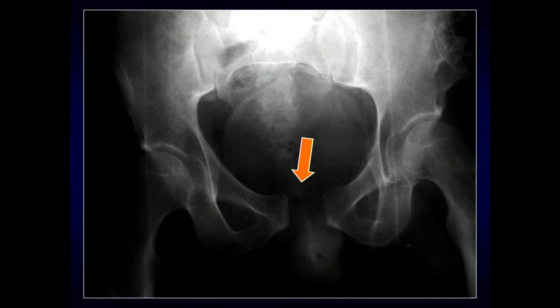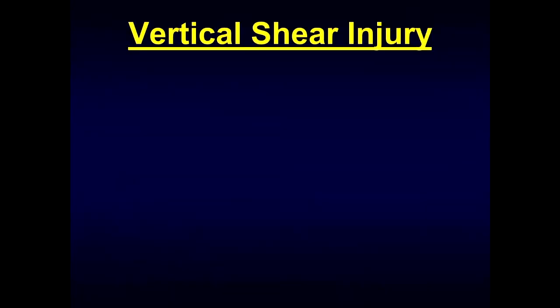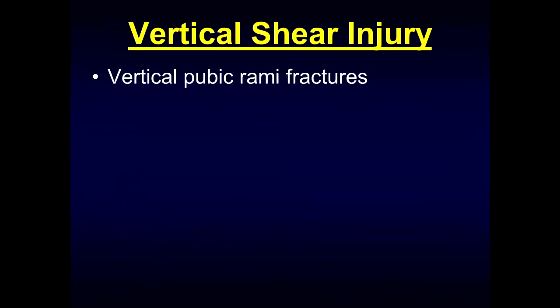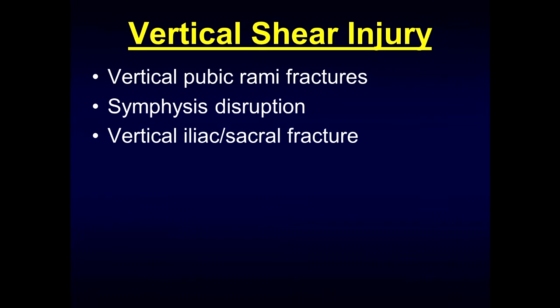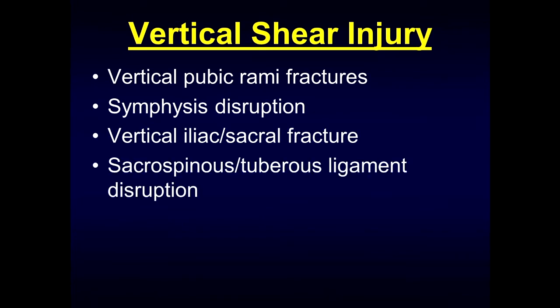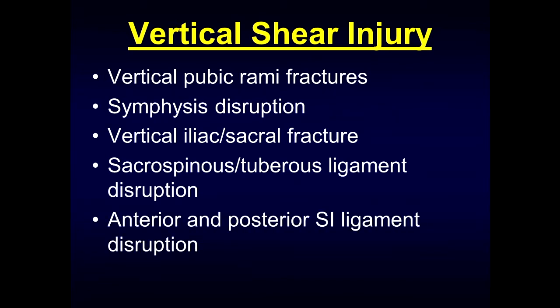In this patient, you can see there's widening of the pubic symphysis, widening of the sacroiliac joint, and fractures through the sacral ala. The vertical shear type of injury involves vertical pubic rami fractures, disruption at the symphysis, vertical iliac and sacral fractures, sacrospinous and sacrotuberous ligament disruption, and anterior and posterior SI joint ligament disruption. The key finding is superior displacement.